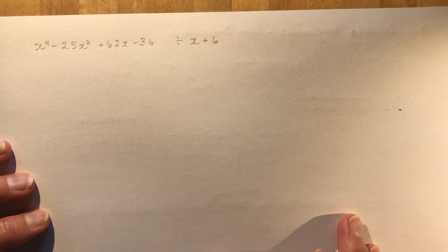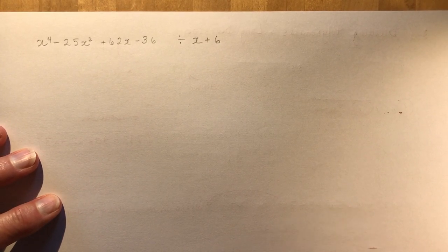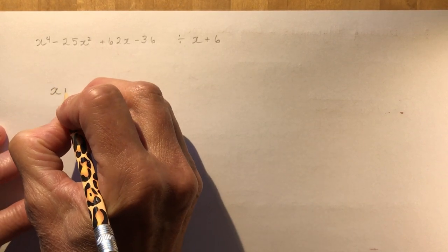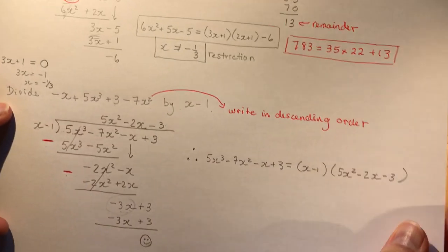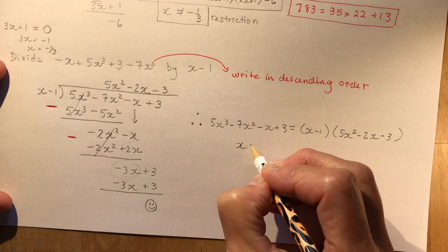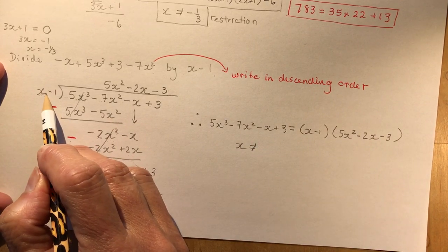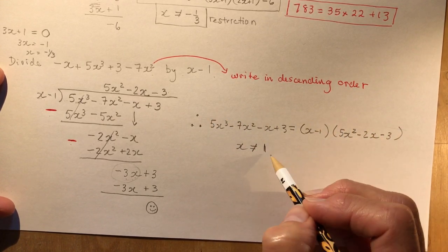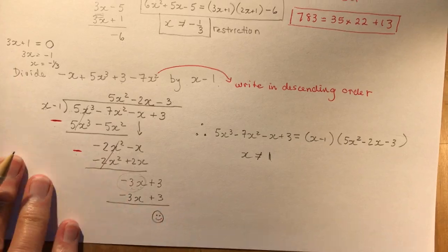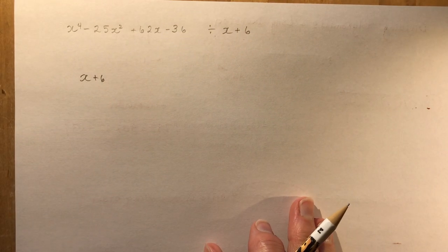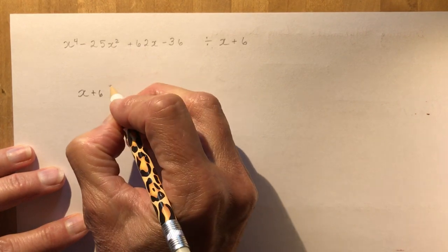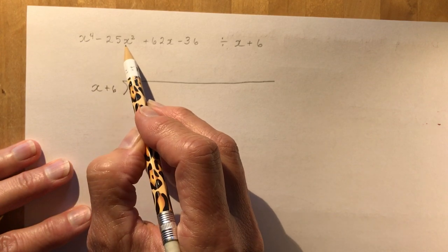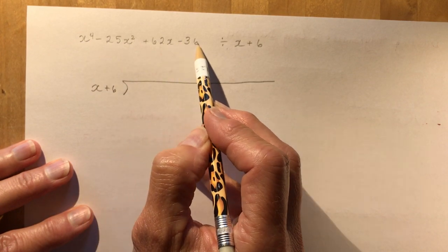Now for the next example, dividing by x plus 6. But wait — we forgot to state the restriction for the previous example. x is not equal to 1 because 1 minus 1 would be zero. So you have your division statement and your restriction. Now, x plus 6 goes into the next polynomial, and this one is a bit trickier.